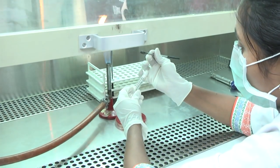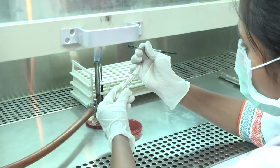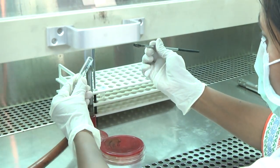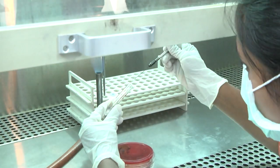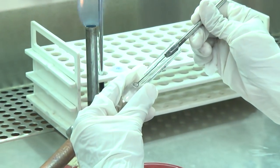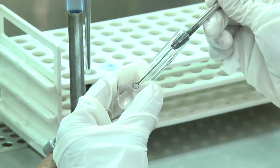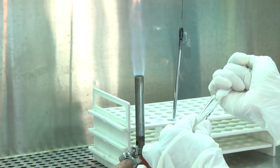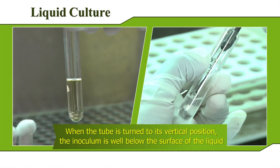Hold the liquid medium in your left hand and remove the cotton plug or cap with the little finger of your hand and flame the neck. Incline the tube or bottle at an angle of 45 degrees and deposit the inoculum on its wall above the surface of the liquid at its lower end. Flame the neck of the tube or bottle and replace the plug or cap. When the tube is turned to its vertical position, the inoculum is well below the surface of the liquid.